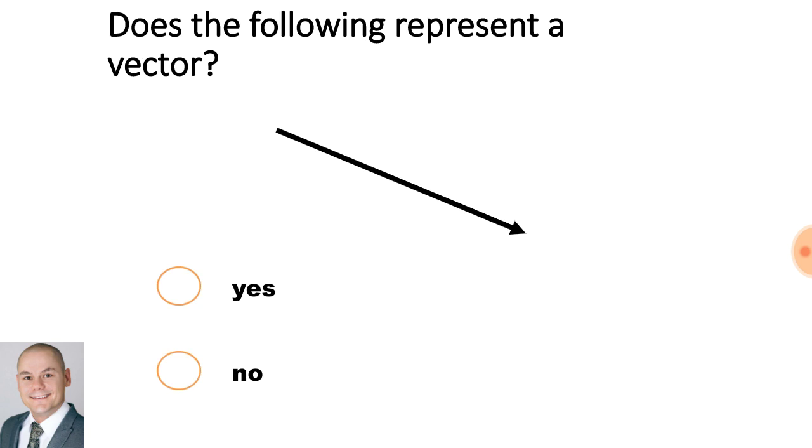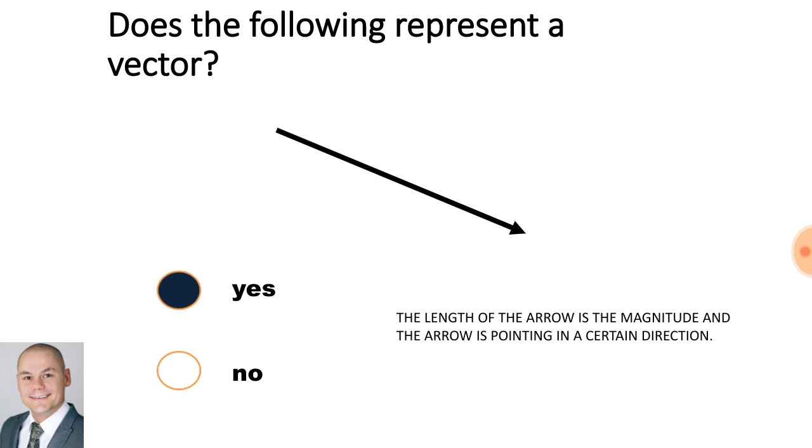Does the following represent a vector? Yes. The length of the arrow has magnitude and the arrow is pointing in a certain direction.